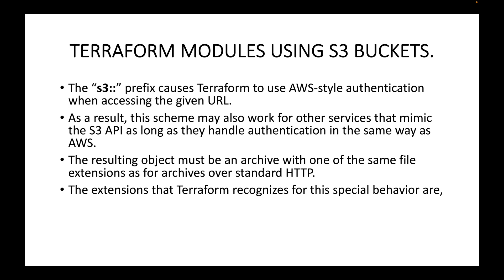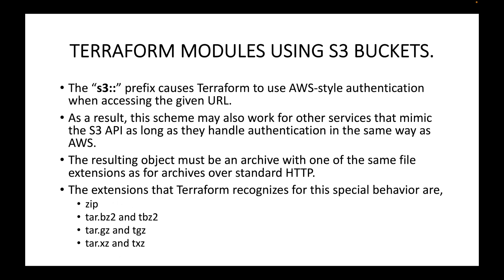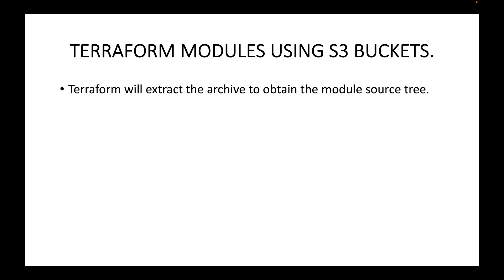The extensions that Terraform recognizes for this special behavior are: `.zip`, `.tar.bz2`, `.tar.gz`, and `.tar.xz`. Any of these archives are valid, but the files must be in an archive — you cannot have the files stored directly in the S3 bucket. You must create an archive of the configuration files and store that archive in the S3 bucket.